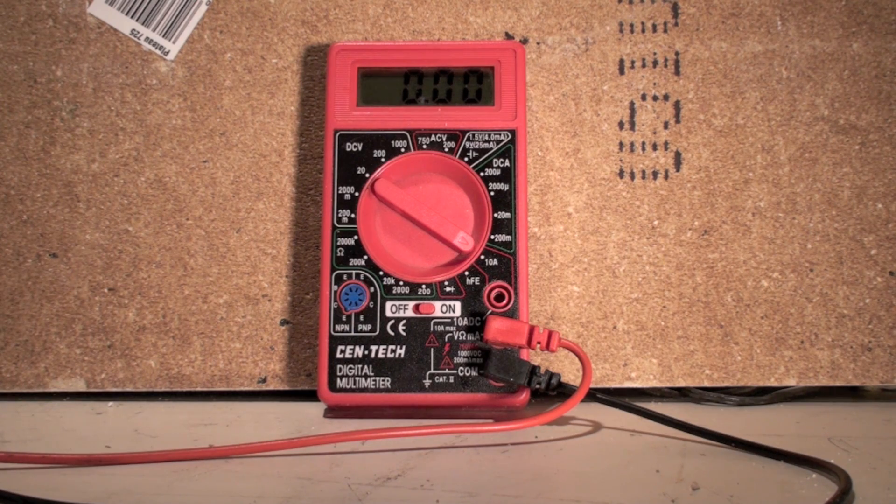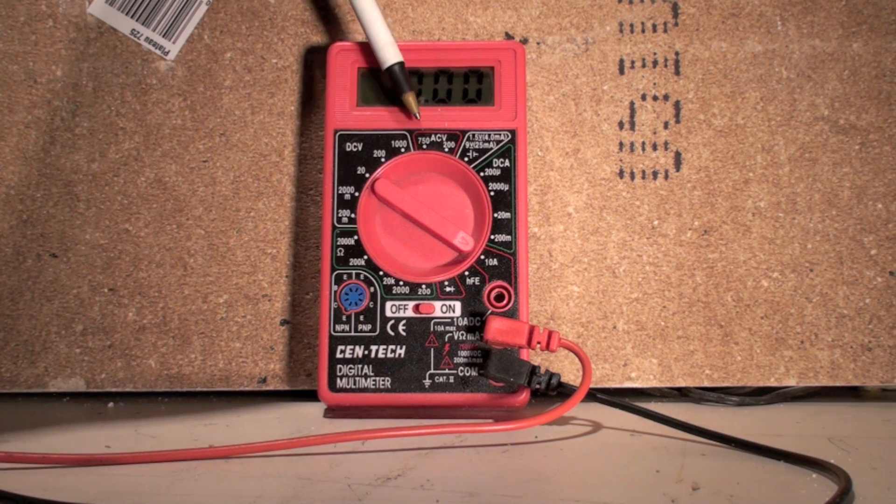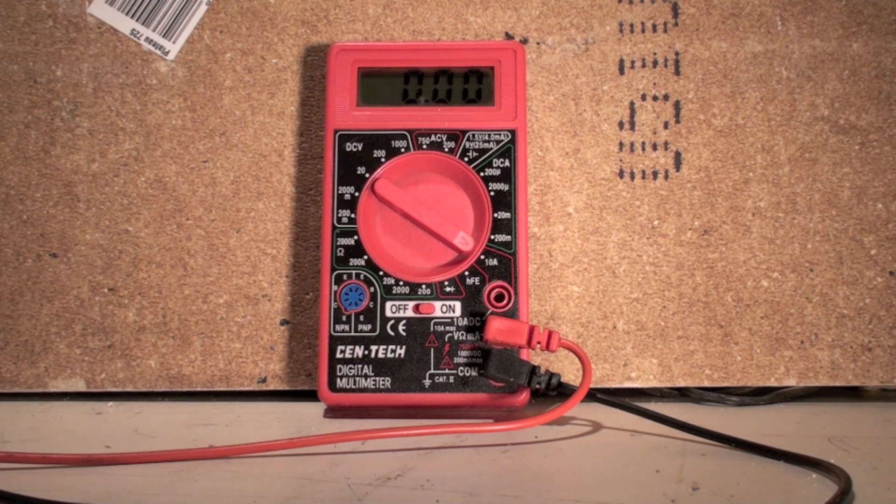AC volts, here again, 750 and 200. If you had a 120 volt circuit, you'd put it on 200, or for 240 you'd put it on 750.